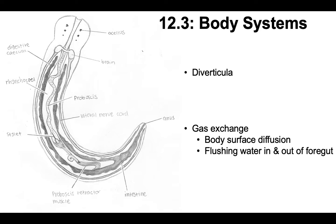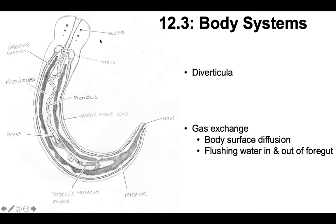In terms of gas exchange — something they share with annelids — most of their gas exchange is through diffusion through the body surface, or by flushing water in and out of their foregut. They bring water in through their mouth and buccal cavity and flush it back out. Because the foregut is lined with lots of blood vessels, they can do gas exchange with that water.